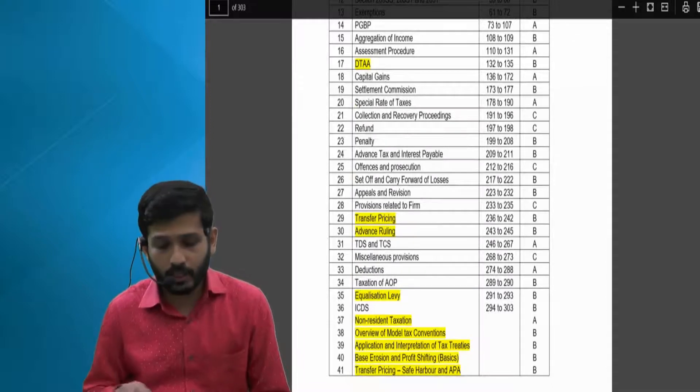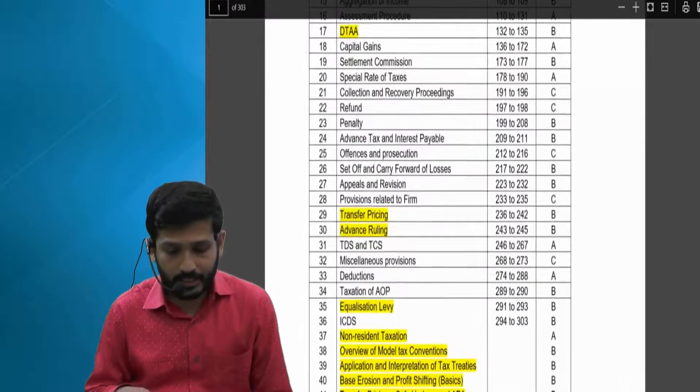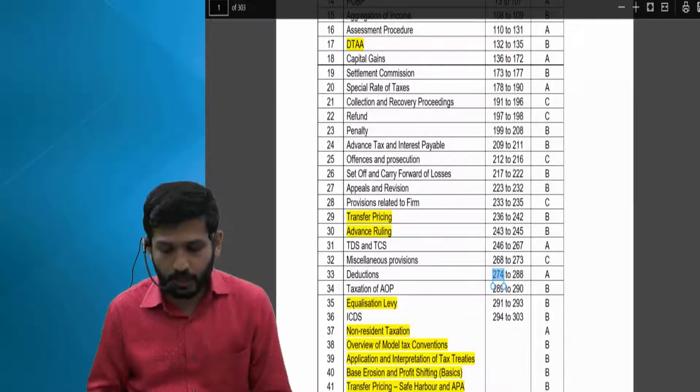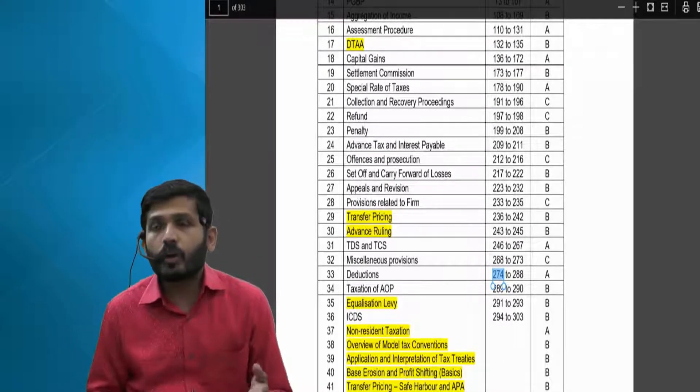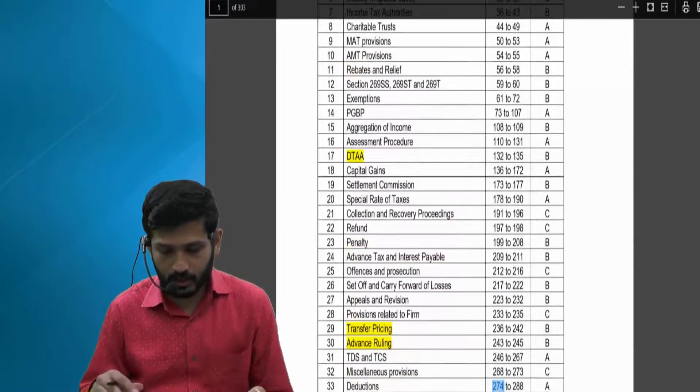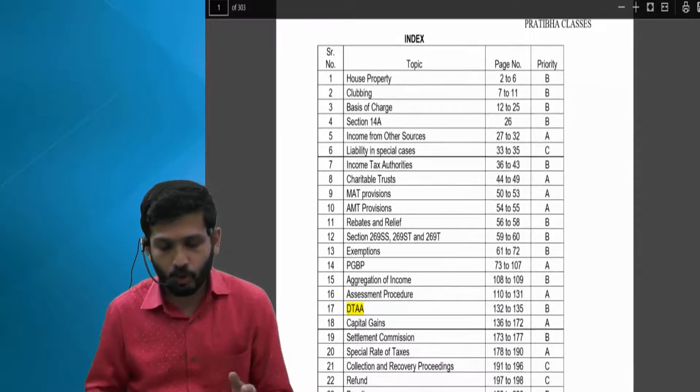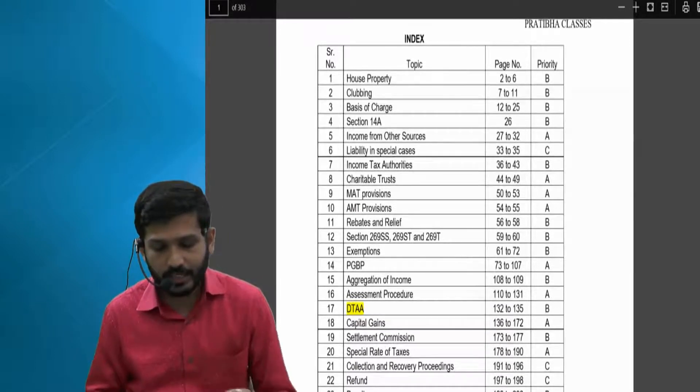If you can see what is being highlighted here in yellow color, it talks about all those chapters which have been covered in non-resident taxation or international taxation. So obviously we will be covering all those things. Along with this, in this entire structure itself, we will be covering both normal taxation, that is income tax, and international taxation.